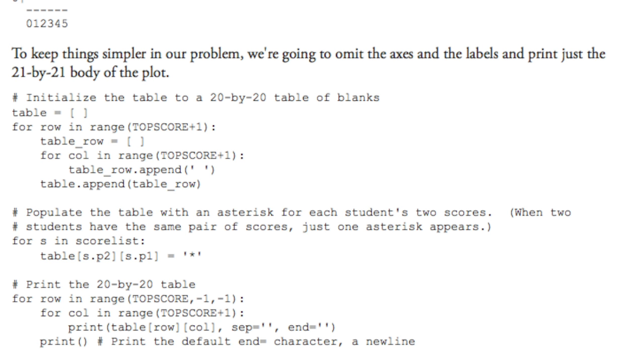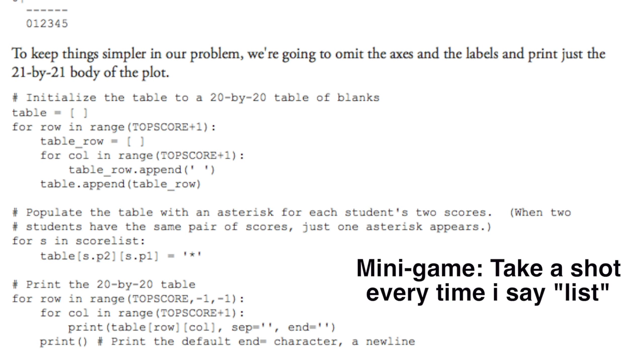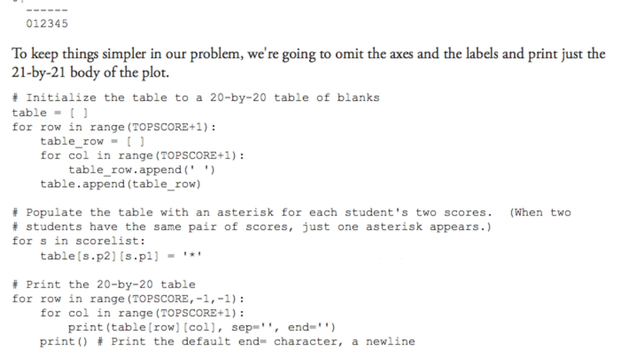So we're going to go through the first one that initializes the table to a twenty by twenty table of blanks. It establishes table which is an empty list. And then it goes for row in range(TOP_SCORE + 1). So what that does is it makes the rows. It says that there will be twenty rows essentially. And then under that it establishes table_row which is another empty list. And then it says for column in range(TOP_SCORE + 1), since it's a twenty by twenty grid, we're going to table_row.append and we're going to add a space. So what this essentially does is it takes table_row and it adds twenty different objects of nothingness. Or it's a list occupied with twenty spaces, all separate objects. And so after that, it'll table.append the table_row.